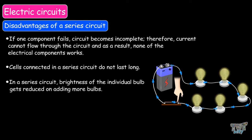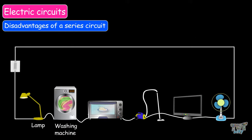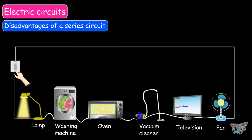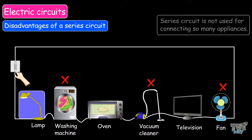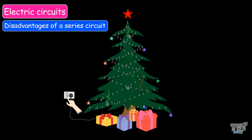Can you imagine a place where you only need to use one switch to turn on a lamp, washing machine, oven, vacuum cleaner, television, and even a fan? This would be a place where all the electrical devices are connected in series, and you can just use one switch to turn everything on or off. But here is a disadvantage: if the lamp gets damaged, nothing would work — not your fan, your machine, nor your vacuum cleaner. This is why a series circuit is not used for connecting many appliances. They are mostly used for making strings of lights to decorate your Christmas tree, because you need to turn on all the lights with one switch.